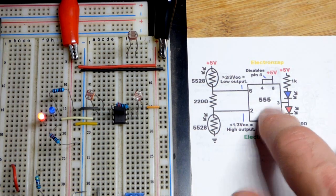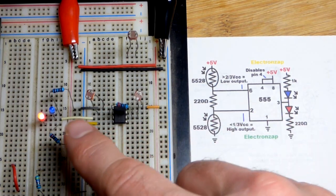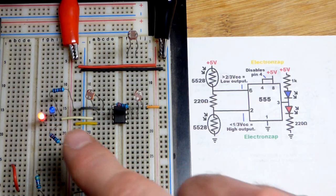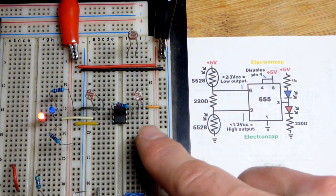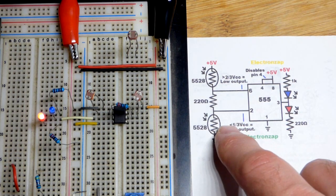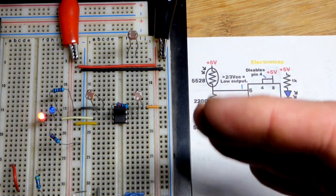In this video we have a 555 timer here wired as a comparator. The output's going to be in one state or the other depending on which light dependent resistor has the brighter light. At an exact level there's some hysteresis, so it kind of has to move a little bit.